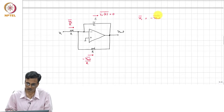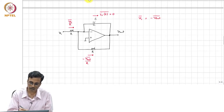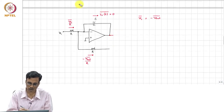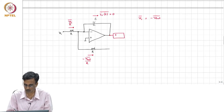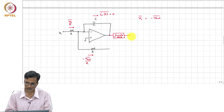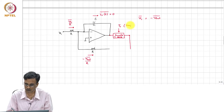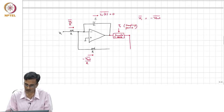Now, what I am going to do next is break the loop and put a sample-and-hold here. This is sampled, the sampling period is T_s, and I now call it V_out of N T_s.